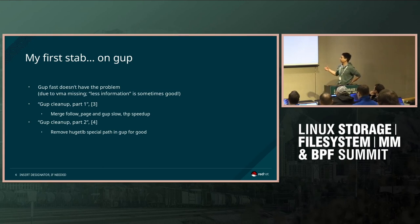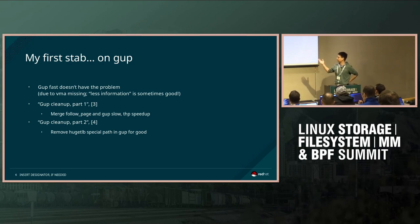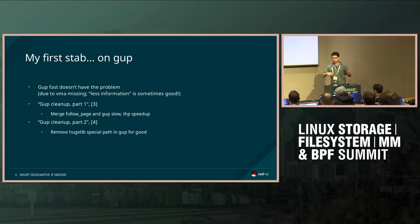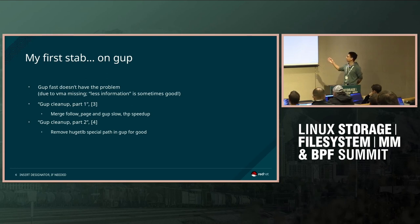I did some showcase on how we could do this by cleaning up the GUP code first. There are actually two paths: follow_page and slow GUP. GUP fast is actually fine because we simply don't have the VMA and can't take the lock. It's kind of good because we have clean code all the time.